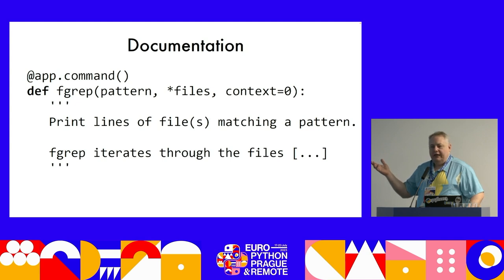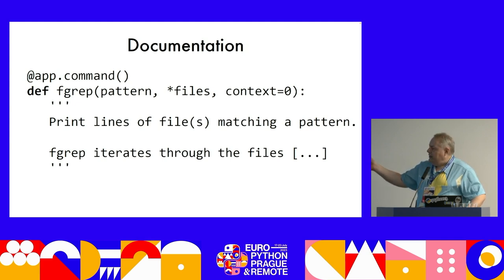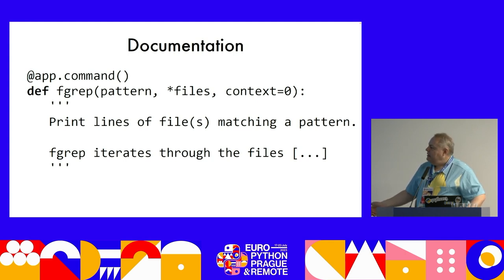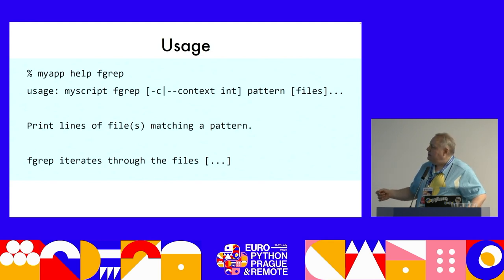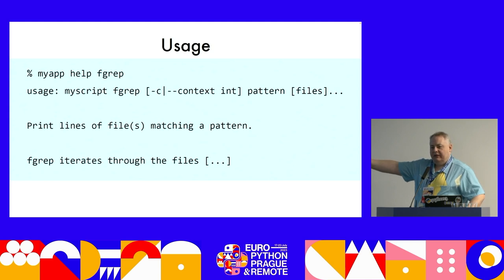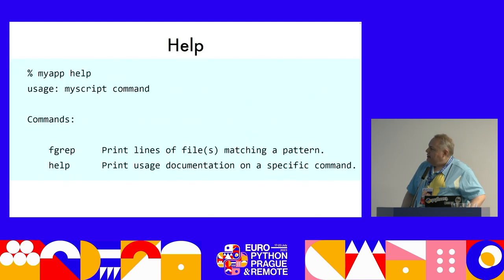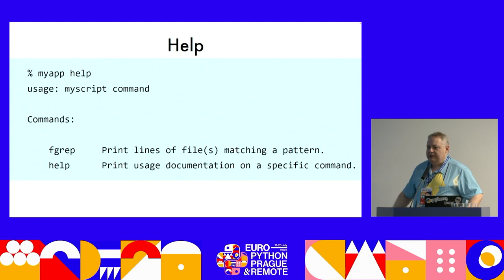For documentation, you just write a docstring for your function. The first line is used on a summary screen, and the entire string is printed when help is requested for that function. Appeal also outdents it for you. You get the help command for free — it shows computed usage based on the function signature and dumps the docstring, plus a summary screen showing all available commands with their first lines.